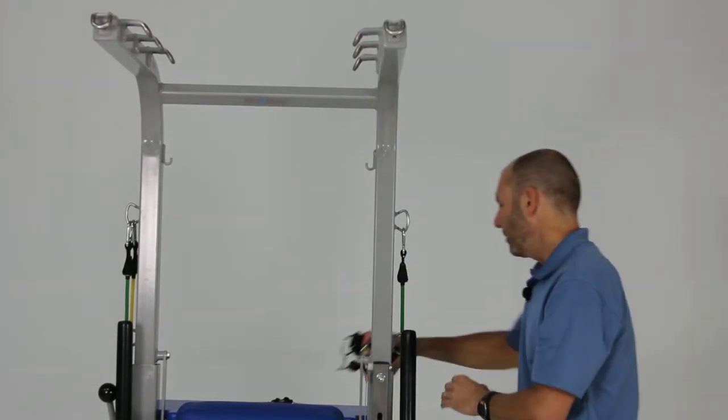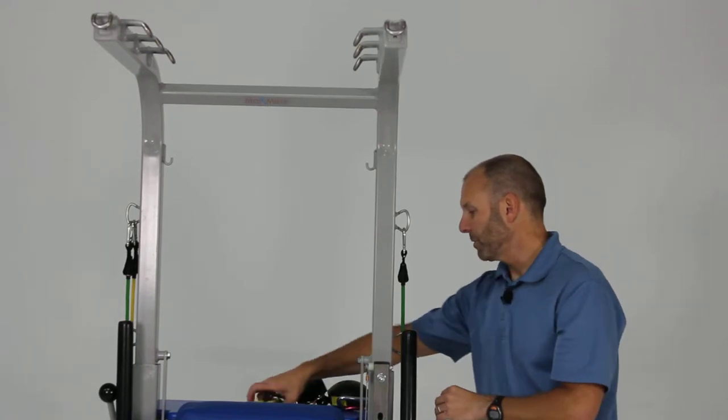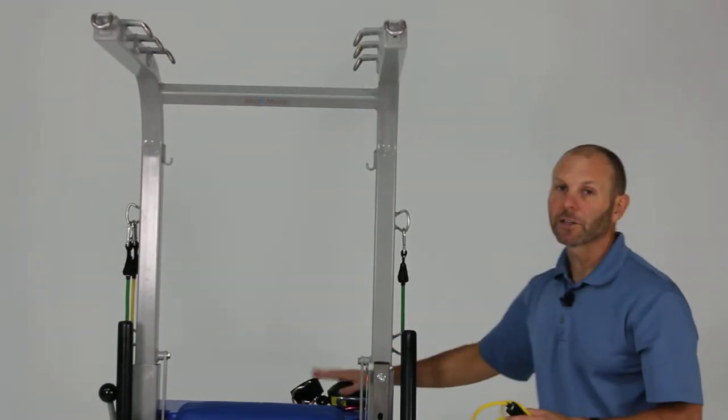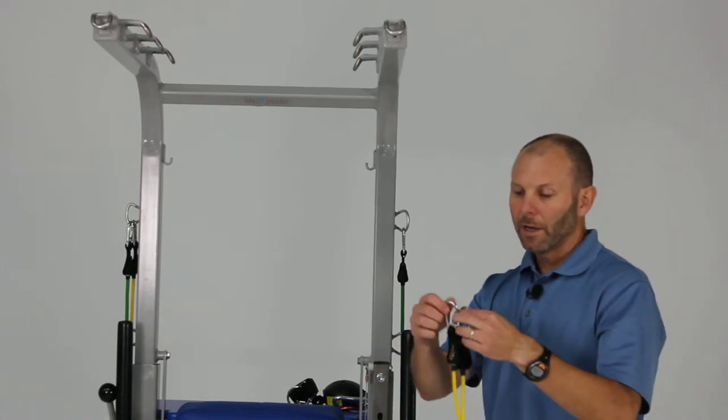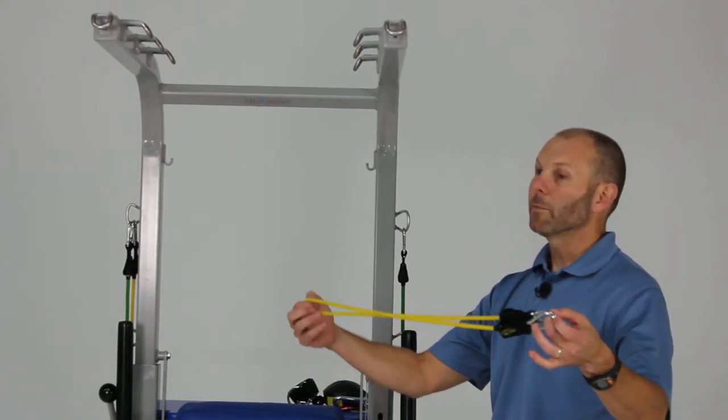The other thing you can do to simulate something similar to the spring balancer, which is an add-on accessory, is taking one of your elastic cords that comes with the unit.